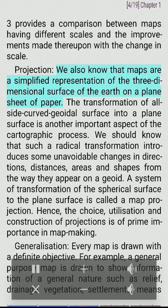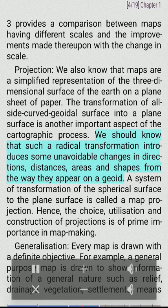Projection. We also know that maps are a simplified representation of the three-dimensional surface of the Earth on a plain sheet of paper. The transformation of the curved geoidal surface into a plain surface is another important aspect of the cartographic process. Such a radical transformation introduces some unavoidable changes in directions, distances, areas and shapes from the way they appear on a geoid. A system of transformation of the spherical surface to the plain surface is called a map projection. Hence, the choice, utilization and construction of projections is of prime importance in mapmaking.